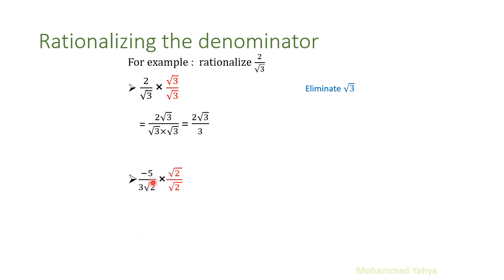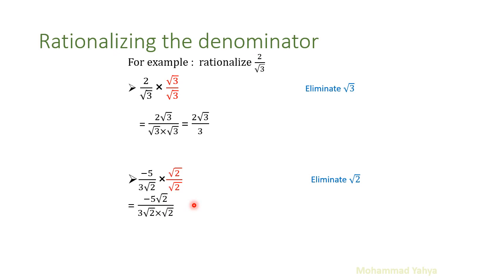Next example: minus 5 over 3 radical 2. We need to eliminate the radical from the denominator. Since it is 3 radical 2 — not 3 plus radical 2 or 3 minus radical 2 — it is enough to multiply only by radical 2; no need to multiply by 3 radical 2. We multiply numerator and denominator by radical 2, giving 3 times radical 2 times radical 2, which is 3 radical 2 squared. The radical is eliminated and the denominator becomes 6.